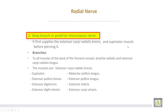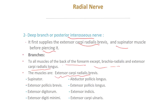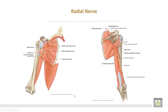The deep branch of the radial nerve, or posterior interosseous nerve, first supplies the extensor carpi radialis brevis and the supinator muscle before piercing it. The posterior interosseous nerve then supplies all muscles of the back of the forearm except brachioradialis and extensor carpi radialis longus, which are taken from the main trunk. Muscles supplied include extensor carpi radialis brevis, supinator, extensor pollicis brevis, extensor digitorum, extensor digiti minimi, abductor pollicis longus, extensor pollicis longus, extensor indicis, and extensor carpi ulnaris.